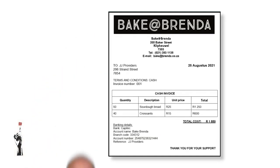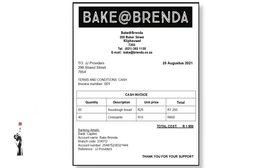Let's go to Baker-Brenda and have a look at the cash invoice a little bit closer. Firstly, it is important that the business's information appears on the cash invoice. Secondly, the client information should also appear. Followed by an invoice number. Fourth, and most important, are the details of the specific transaction. For example, in this case Baker-Brenda sold a lot of sourdough bread and croissants to JJ Providers. This is a larger payment and that is why a cash invoice is more preferable.